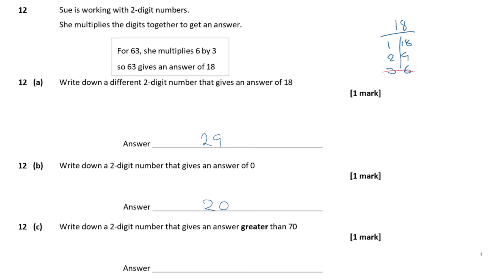Question 12b — write down a two-digit number that gives an answer of 0. Any number multiplied by 0 is 0, so any number ending in 0 works — such as 20, 30, 40, or 50. Question 12c — write down a two-digit number that gives an answer greater than 70. Thinking of large single digits: 8 × 9 = 72, which is greater than 70. So 89 works.